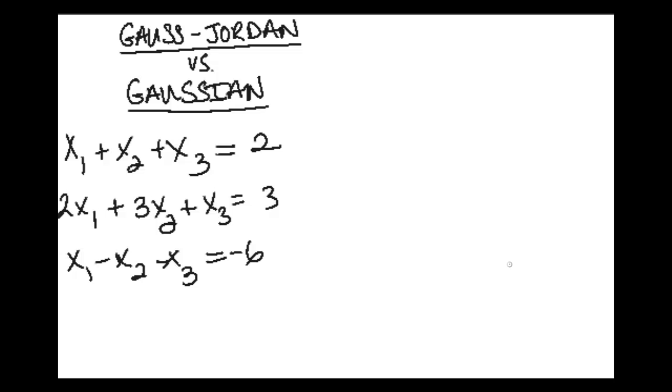The main difference is once you set up your augmented matrix. In this case our augmented matrix would be 1, 1, 1, 2, and 2, 3, 1, 3, and then 1, -1, -1, -6. Once you have this augmented matrix, the main difference is where you go from here.